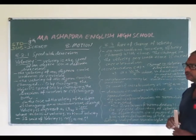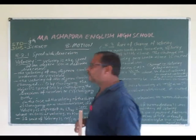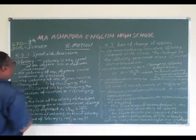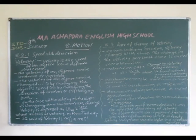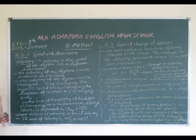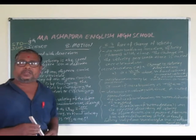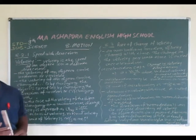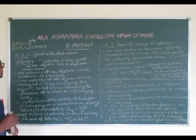So, first of all, now we start with 8.2.1 — speed with the direction. We know very well what is speed. Speed is called the distance traveled divided by time taken.